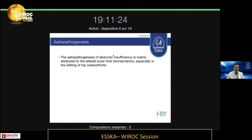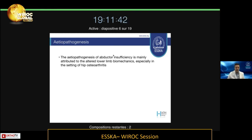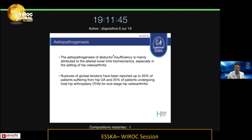Why do these problems happen? It is mainly attributed to lower limb biomechanics with age, especially in the setting of hip osteoarthritis, so many patients you will be seeing for OA have a concomitant tendinous problem. Ruptures of the tendons have been reported in up to 20% of patients suffering from OA and 25% of patients undergoing hip arthroplasty for end-stage arthritis. These reports come from intraoperative findings — surgeons going in either through a lateral or posterior approach and observing that there was a tendinous rupture on site.